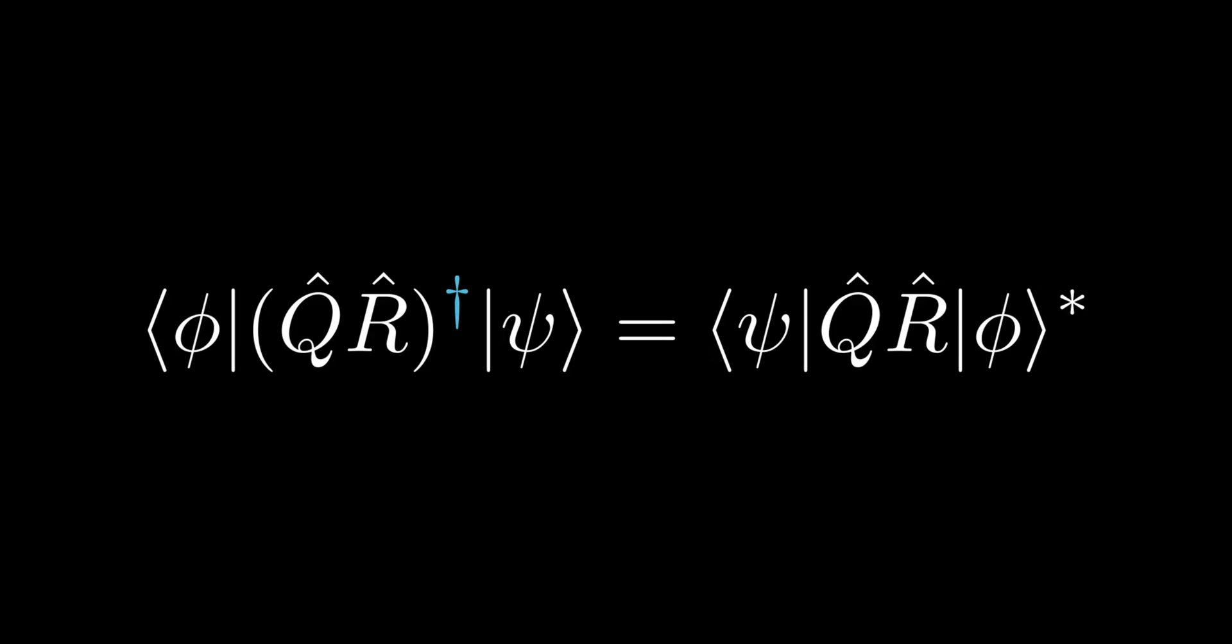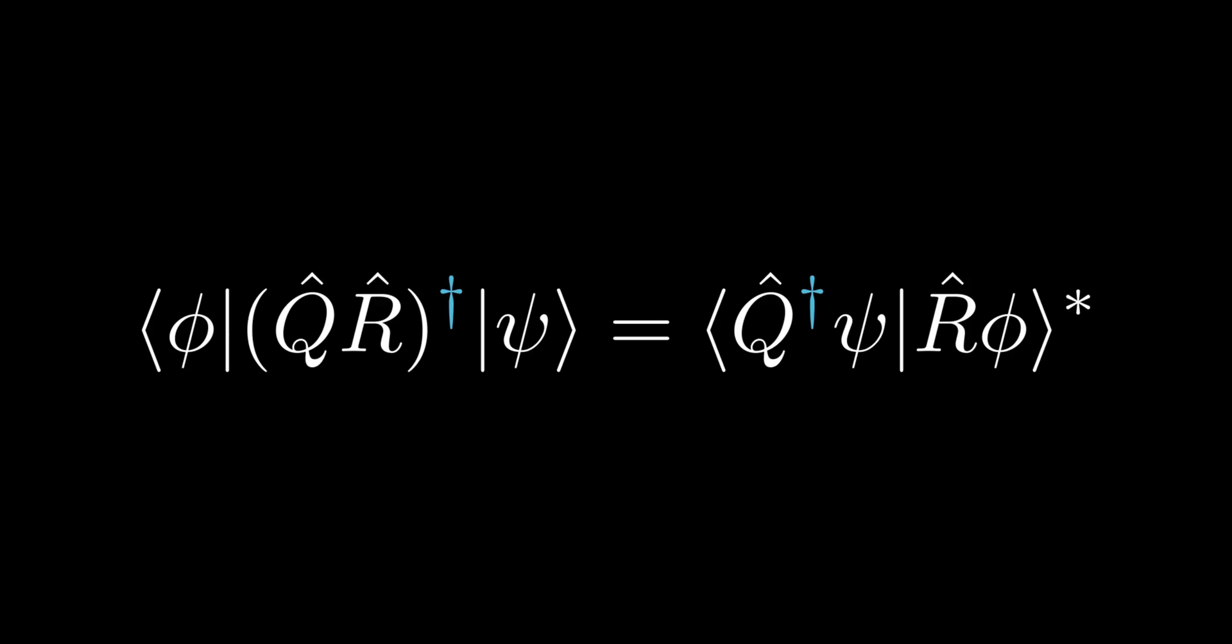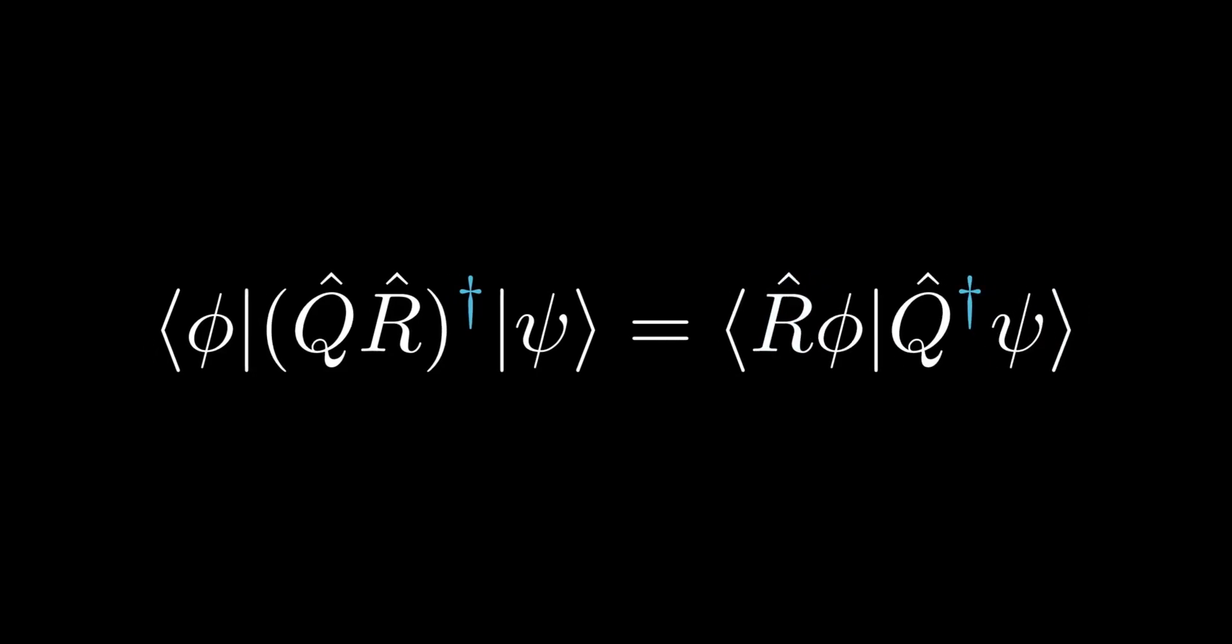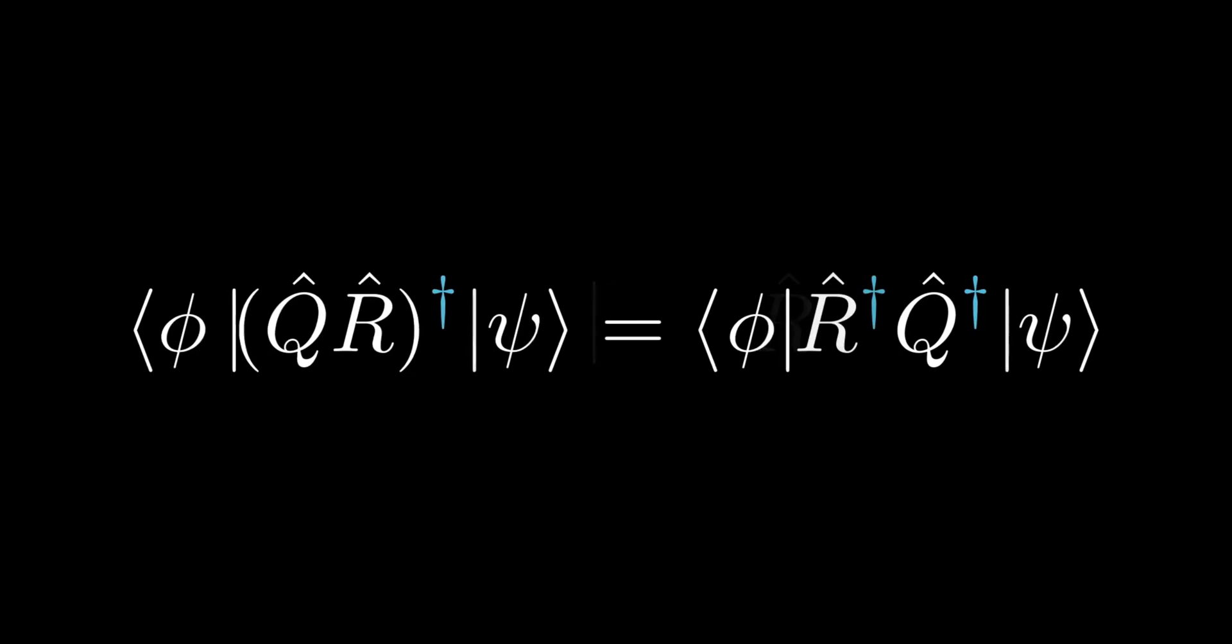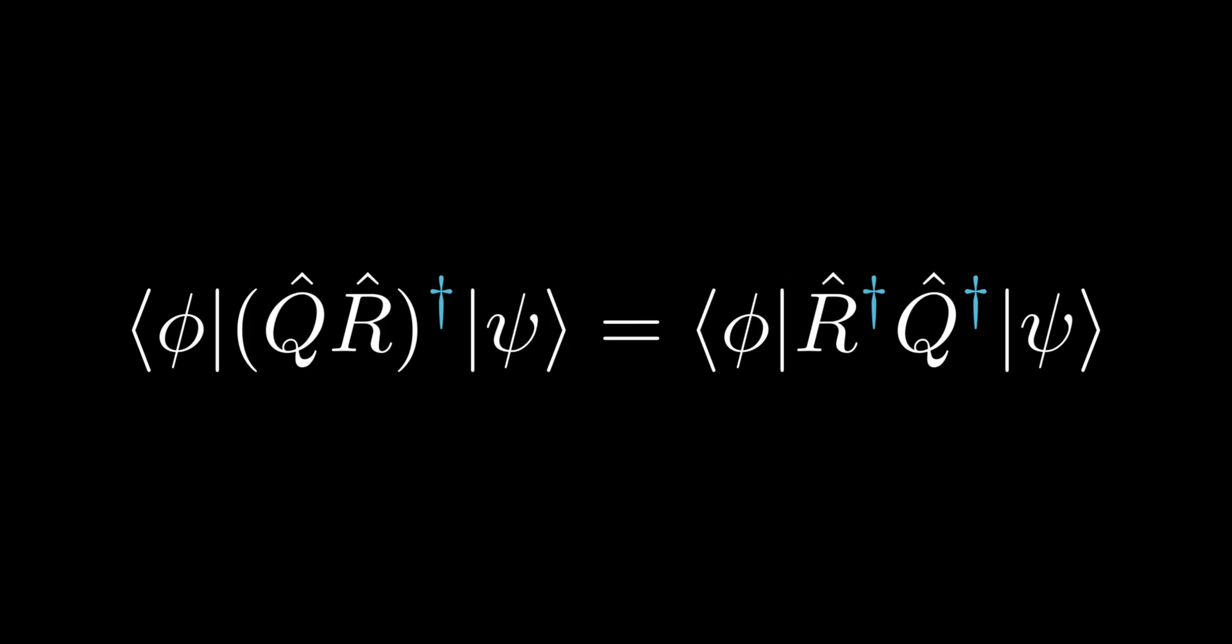We allow the dagger of QR to operate on ket ψ, then left multiply by bra ϕ. We then use the property of Hermitian adjoints to swap the ϕ and ψ and remove the dagger and the complex conjugate, the inner product. We then allow R to act into the ket ϕ and Q to act into bra ψ. Q gains a dagger as it is moving into the left argument of the inner product. We then use the star to swap left and right side of the inner product. And finally, we take Q dagger out of the ket and R out of the bra. As R is moving from left argument to the right argument, it now gains a dagger. As both ket ψ and bra ϕ are arbitrary, this completes the proof.